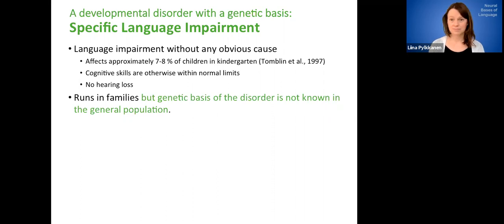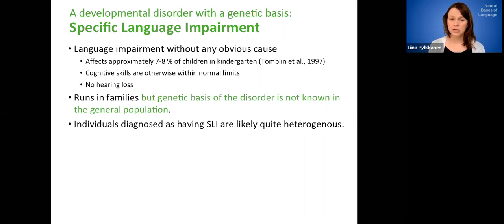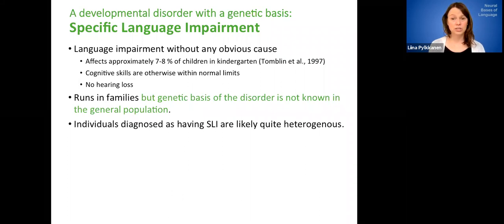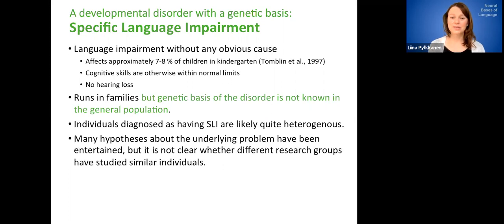So SLI or specific language impairment runs in families. So we kind of have evidence that it does have a genetic component. But the genetic basis in the general population, in the general SLI population is not known. Okay, so there's still some mystery about it. And in general, individuals that carry this diagnosis can actually be quite heterogeneous. So it's not necessarily, each SLI person is not like the other one.